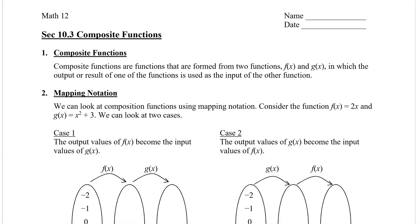In this video, I'm going to show you how to evaluate a composite function. A composite function is a function that is formed from two functions, let's say f and g, in which the output or the result of one of the functions is then used as the input of the other function. Sometimes it could also be used as the input of the same function that we started with.